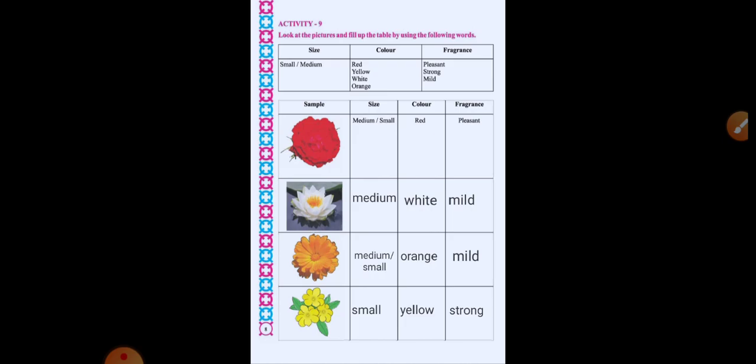Here we have example of rose. It is medium and small size flower. It has red color. Right? And it has pleasant fragrance. Us ki khusbu bohut achi hoti hai.